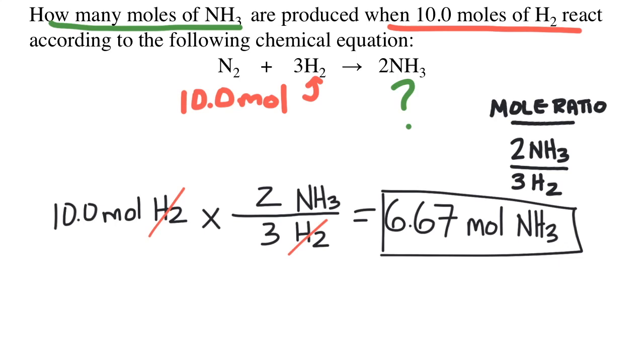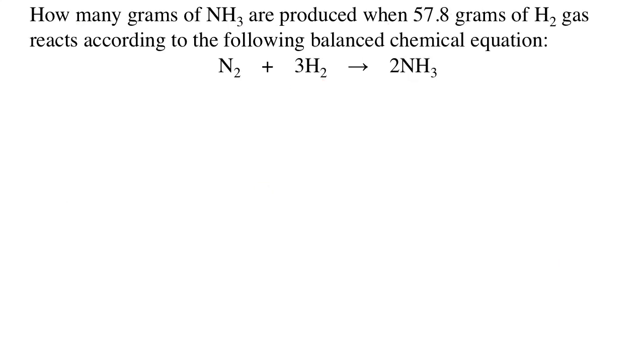The chemical equation is always in units of moles. Remember, that's what those coefficients mean. But we can easily convert grams or liters into moles so that we can still use the chemical equation in the way that it is written. Here's an example. How many grams of ammonia are produced when 57.8 grams of hydrogen gas react according to the following balanced chemical equation?